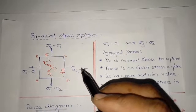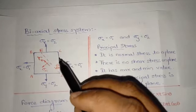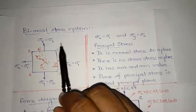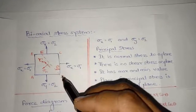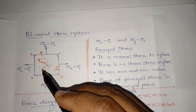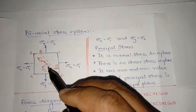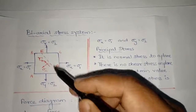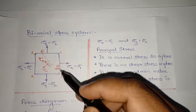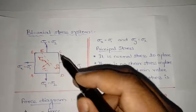Coming back to this element ABCD, which is subjected to biaxial stress along the x direction and y direction. Now let us consider a plane oriented at an angle theta — this plane is ED. We are interested in finding the normal stress to plane ED and the parallel tangential stress to plane ED. For this we will draw segment CDE separately and the forces acting on this part of the element.